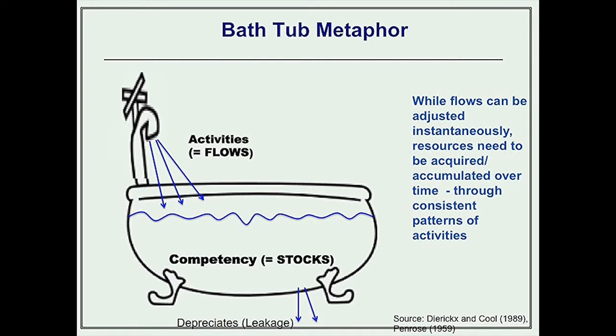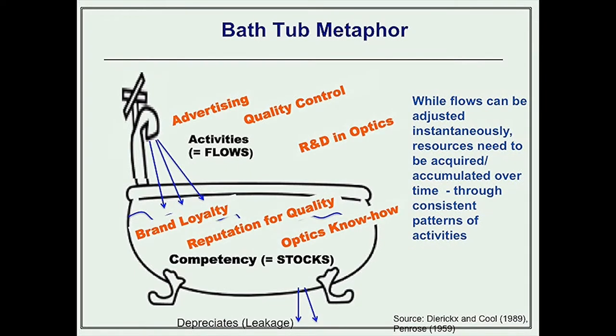Resources and activities are linked together. By performing activities the firm gains resources. You do advertising and over time that advertising and other marketing activities build up into, you hope, a brand and brand loyalty. You do quality control — quality control is an activity — and over time, if that quality control is successful, you gain a reputation for quality: a resource. You do R&D; perhaps if you're Canon you do R&D in optics, and over time that builds into optics know-how. So unlike Porter's view of strategy, where you're focusing on those activities of advertising, quality control, and R&D, for the resource-based view you're focusing on those resources the firm has: the brand loyalty, reputation for quality, optics know-how, and so on.